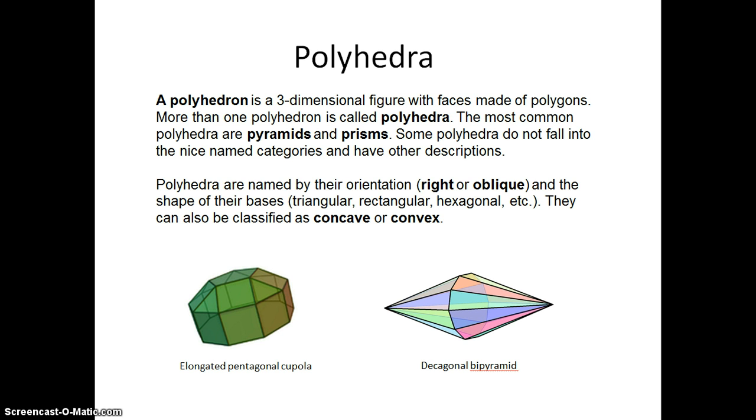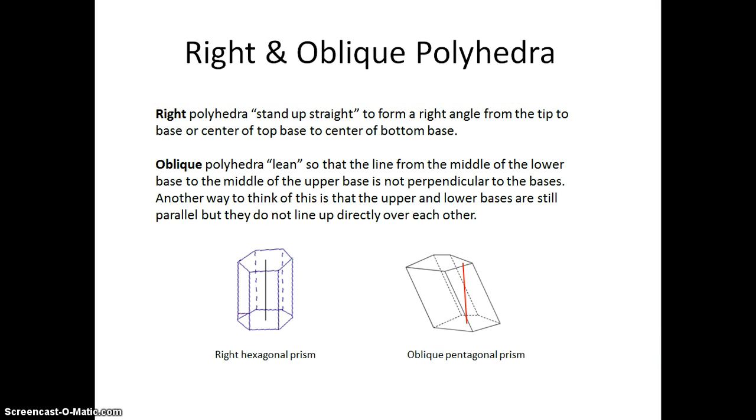Polyhedra are named by their orientation and the shape of their bases. They can be either right or oblique, and their bases can be triangular, rectangular, hexagonal, et cetera. We can also classify polyhedra as convex or concave. Let's take a look at each of these ideas.